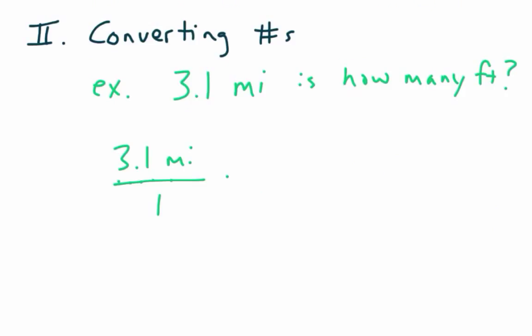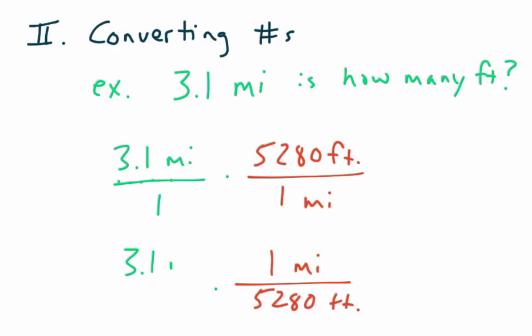So I have this 5,280 feet is one mile. So I can write it this way. I can either say 5,280 feet is one mile. Or do you agree I could write it as though one mile is 5,280 feet? That I could write it as a rate. And I'm going to rewrite my green fraction, 3.1 miles. Now, the question is, which one of those two can I cancel things out?